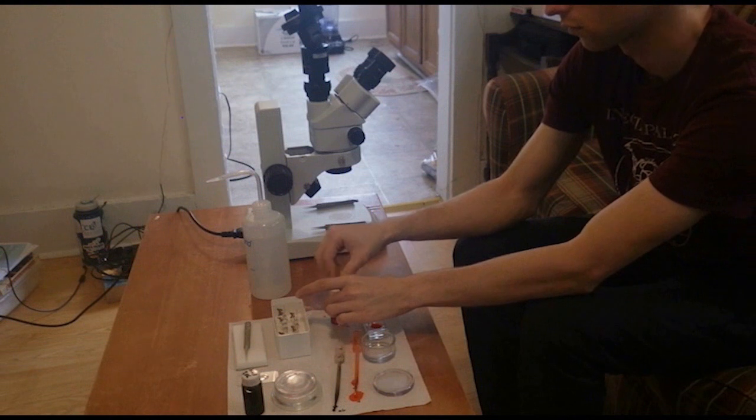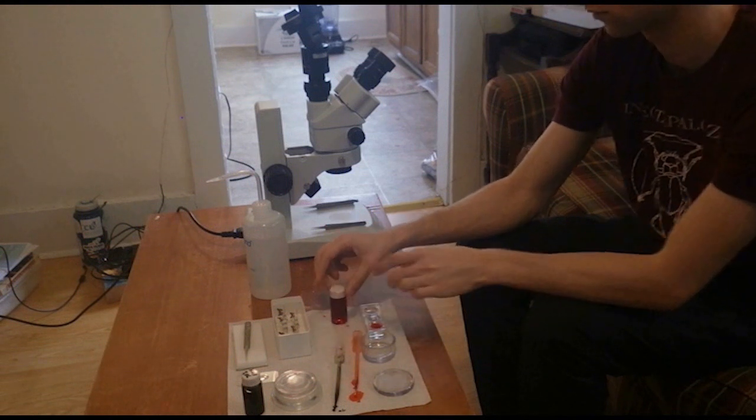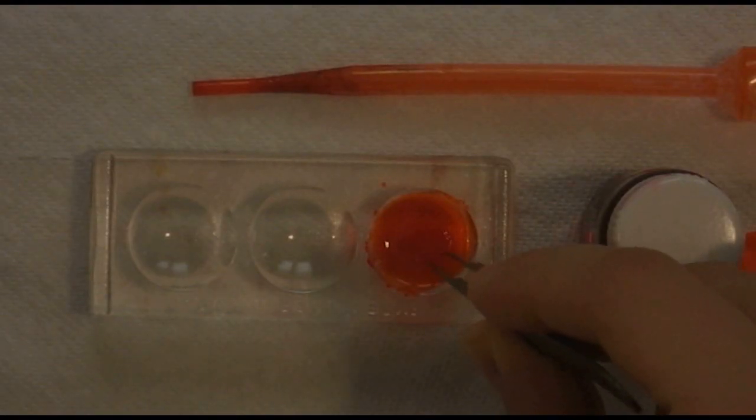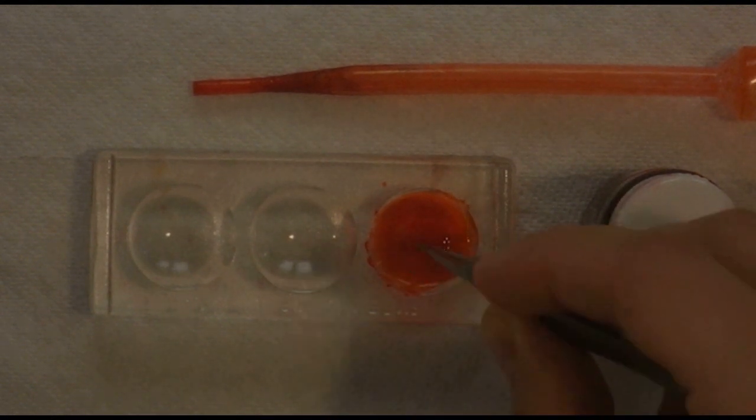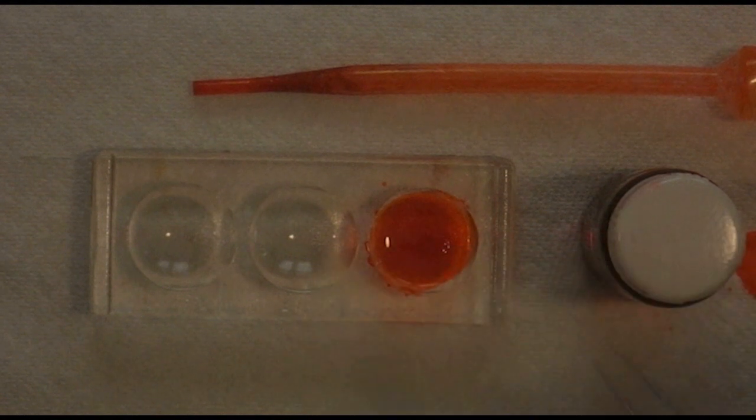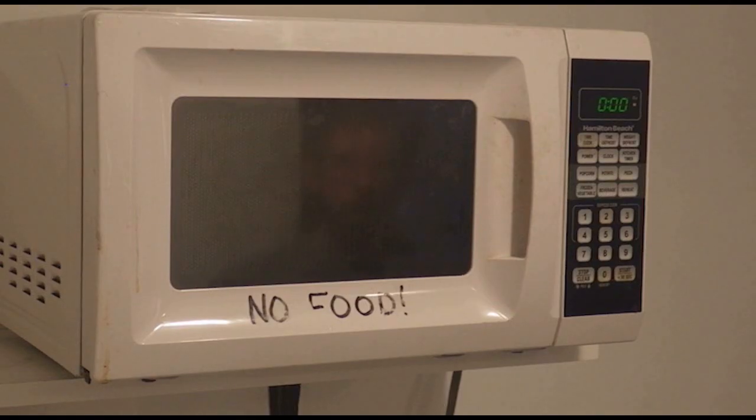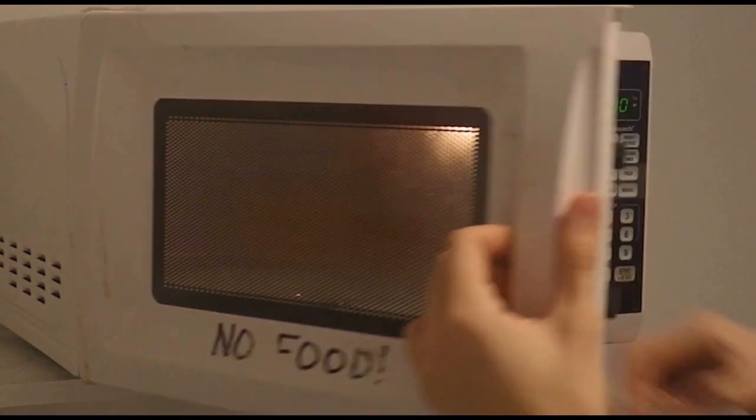Now I can take the genitalia and abdomen and submerge them in the ESNY to begin the staining process. This can take about 7 to 10 minutes at room temperature or about 3 seconds in the microwave to set the stain.